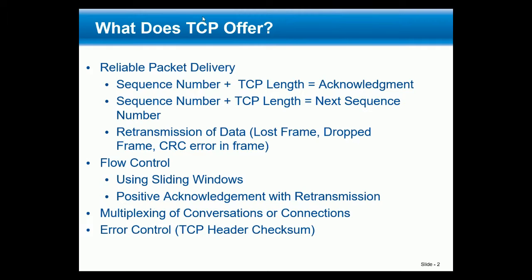From then on, how we do reliable packet delivery is: my sequence number plus data length — or think application payload — so sequence number plus data length is the appropriate ACK from you. Or if I'm sending multiple packets, it will be sequence number plus length is my next sequence number, plus length is my next sequence number plus length, and eventually you'll ACK me depending upon timers and how many outstanding packets there are.